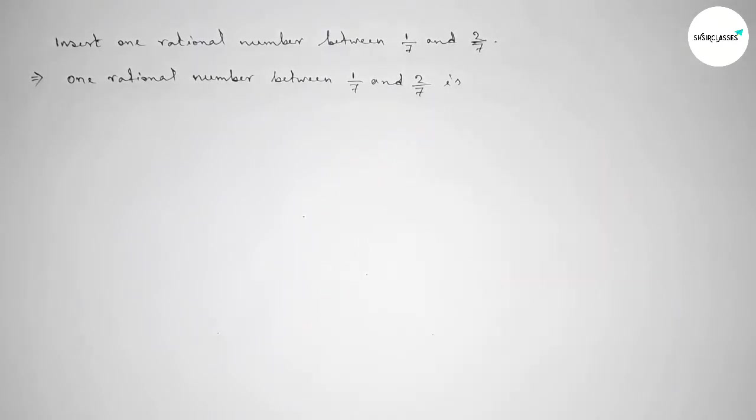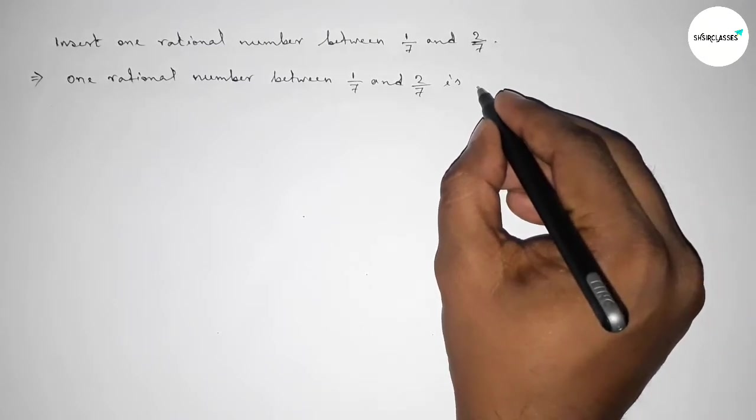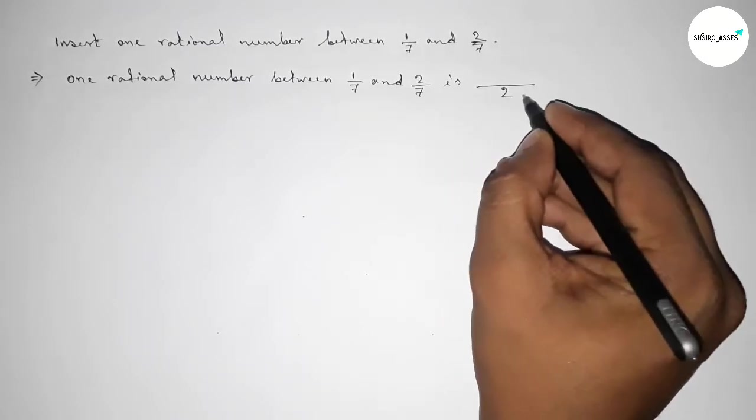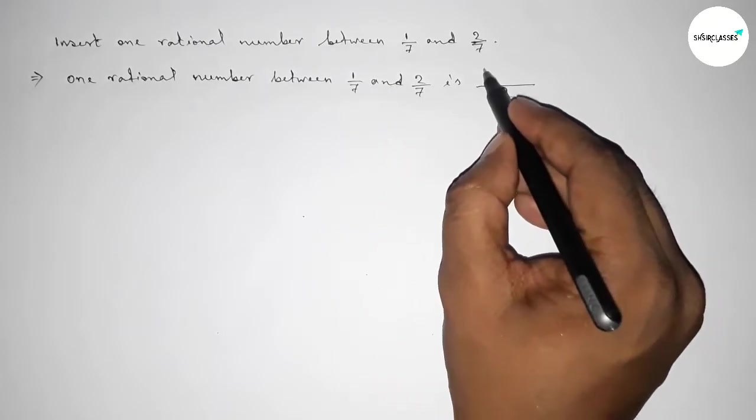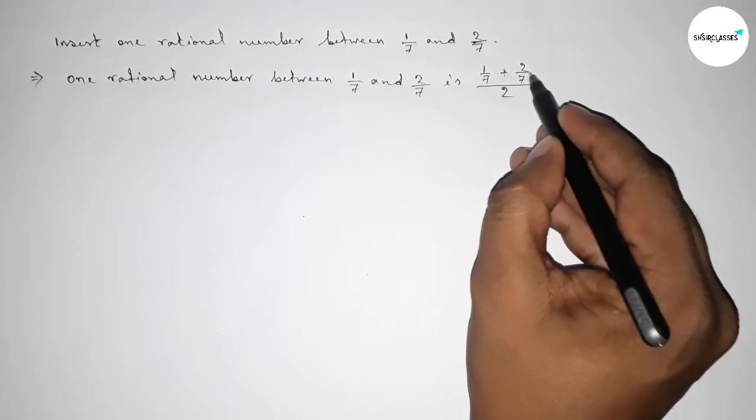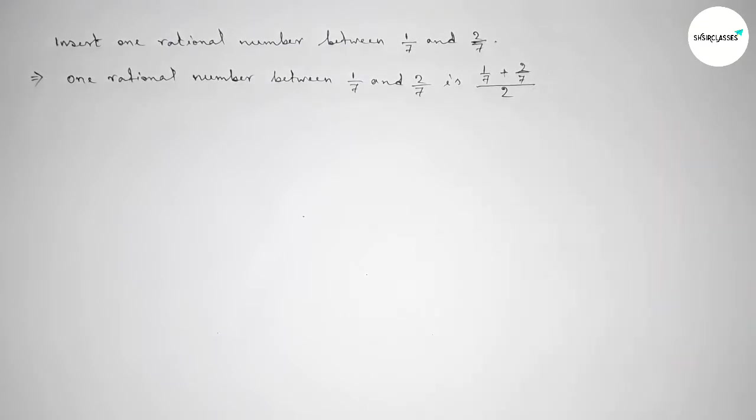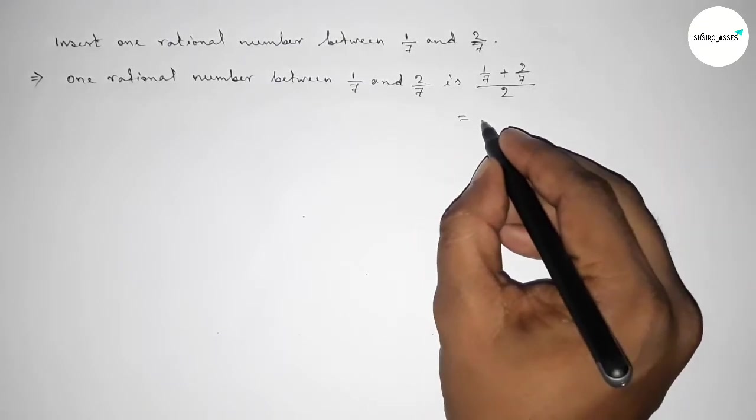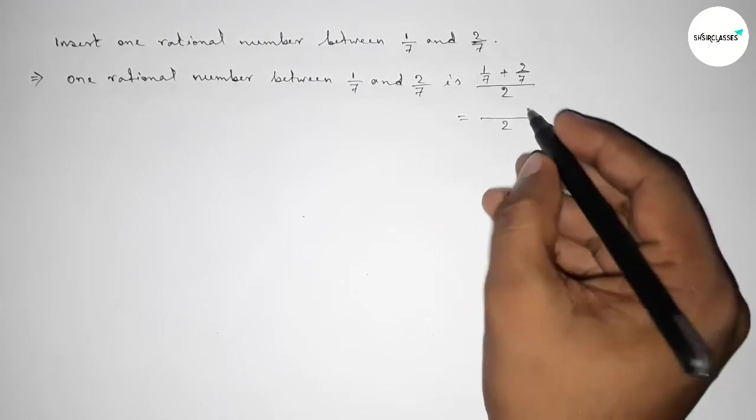Taking here equal to, now first drawing a straight line. The total number of numbers is 2. Now taking the sum here: 1/7 plus 2/7. Simplifying this, so here 2 and...